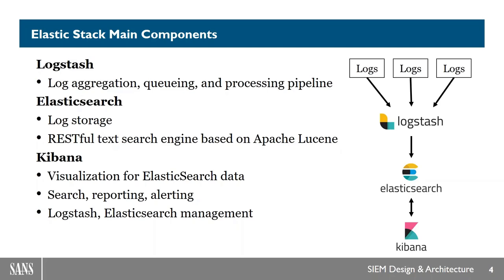Those logs get funneled into the system and fed to the Elasticsearch engine for storage, search, and indexing. Elasticsearch itself is a RESTful text-based search engine based on Apache Lucene — it's a standalone, complete product that acts as a wrapper for Apache Lucene and adds a REST API and many convenient features. The third piece is Kibana, the GUI front-end that makes it easy to interact with Elasticsearch, handling visualization, searching, cluster management, stack health monitoring, machine learning, and other visualization tools.